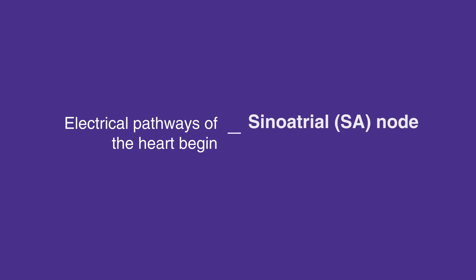The electrical pathways of the heart begin in the sinoatrial, or SA node, and the right atrium. Together they create electrical activity that acts as the heart's natural pacemaker.